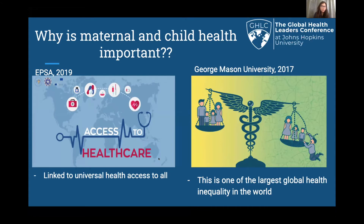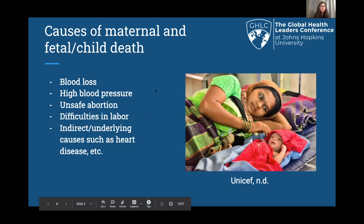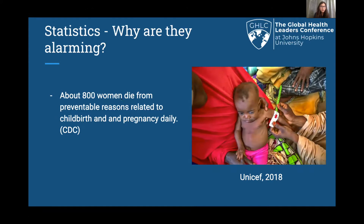Needless deaths that could have been prevented occur every single day because of inadequate health systems. And if maternal and child health improves, it could also improve the mental health of families. The most common causes of maternal and child deaths are blood loss, high blood pressure, unsafe abortion, difficulties in labor, and indirect causes such as heart disease. The sad part is that most of these causes are preventable. According to the CDC, about 800 women die from preventable reasons related to childbirth and pregnancy daily. Of these deaths, 99% occur in developing and third world countries, and 40% of deaths in children are under the age of five or are newborns.